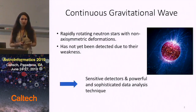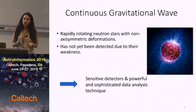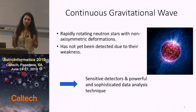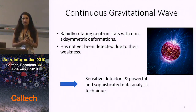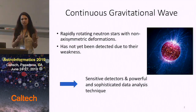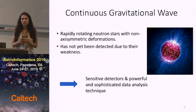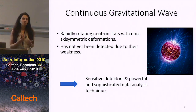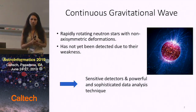Continuous gravitational wave is a type of gravitational wave that is emitted from the source continuously, and that's why it's called continuous gravitational wave. The source can be, for example, a neutron star orbiting around its axis but with some irregularities on the surface — for example, mountains — that can generate this continuous gravitational wave.